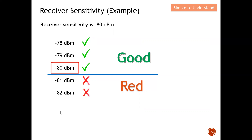Any signal above the receiver sensitivity threshold, I can guarantee you will receive it. Anything below that threshold, I cannot guarantee reception. Basically, this is the definition of receiver sensitivity — it quantifies how good the radio is. If I can push this number as low as possible, the better the radio, because I'm able to receive a very weak signal.